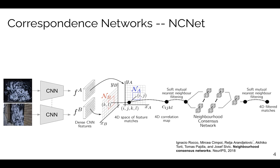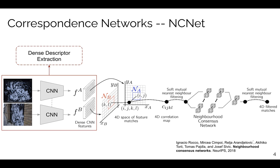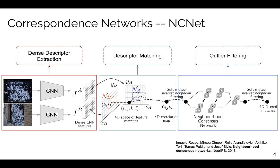Recently emerged correspondence networks perform the matching task inside a single network. NCNet first extracts dense descriptors from images, which are matched via a correlation layer followed by a neighborhood consensus module to filter outliers. Due to having to store all potential matches in the correlation map, NCNet is memory limited.